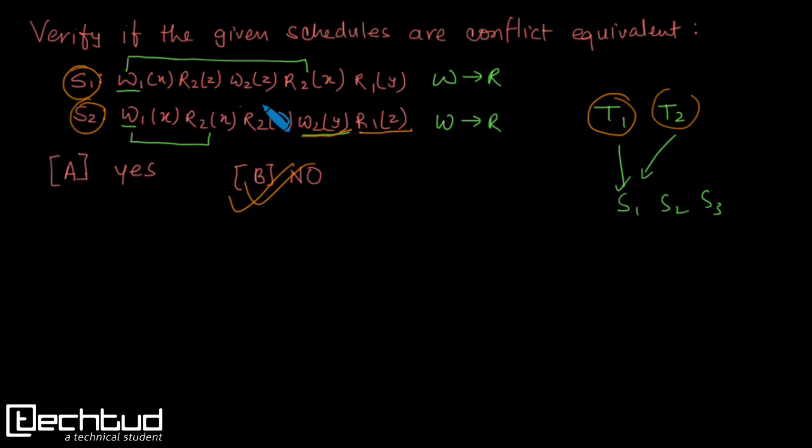I intentionally took this example to explain while solving the problem. You need not to be in hurry and go for finding out just conflicting operations. You also make sure that these two schedules are made up of same transaction. So I hope you understand it. See you in the next lecture. Thanks for watching.